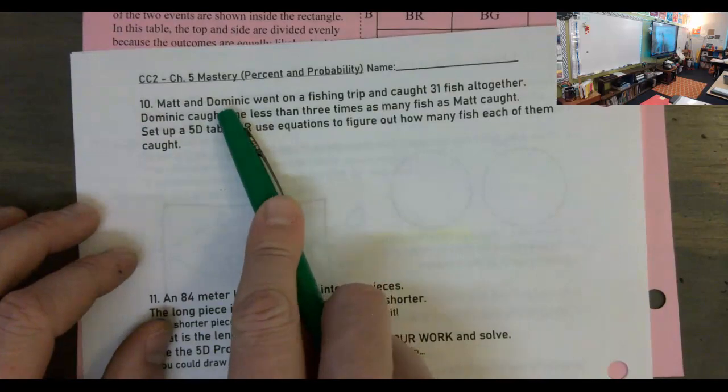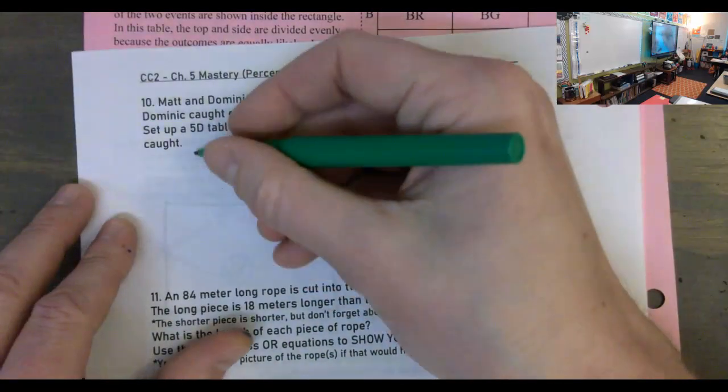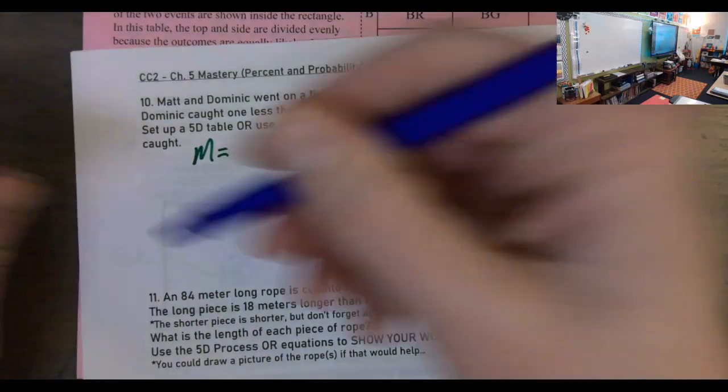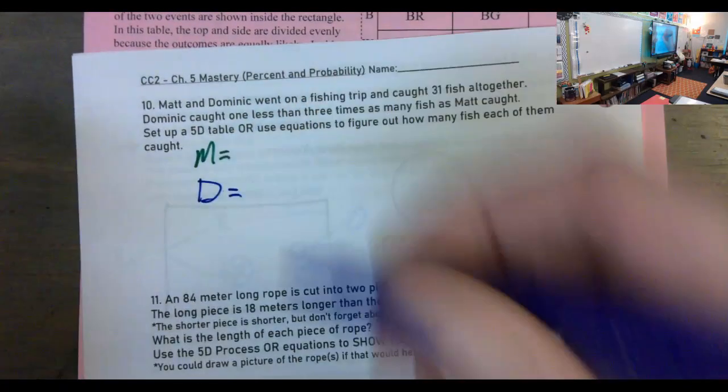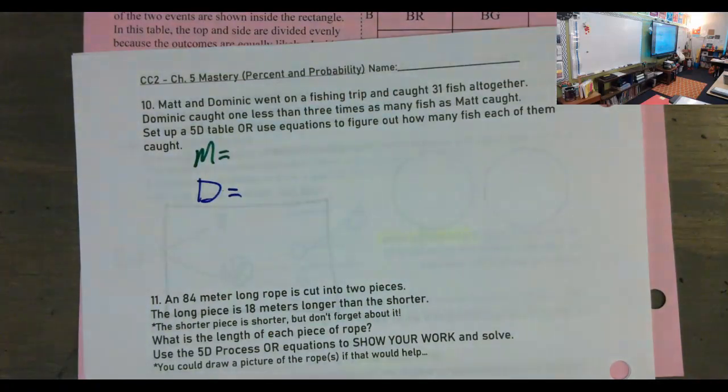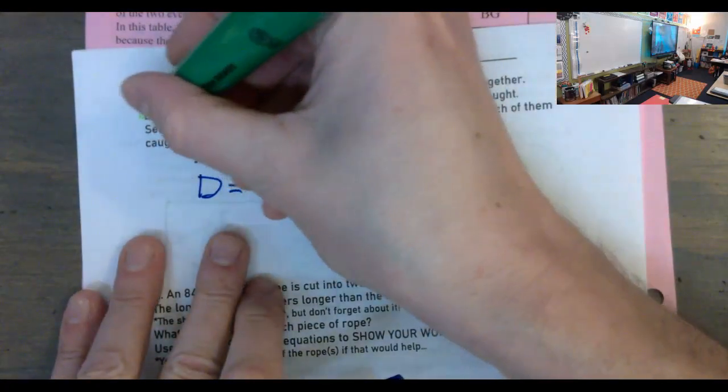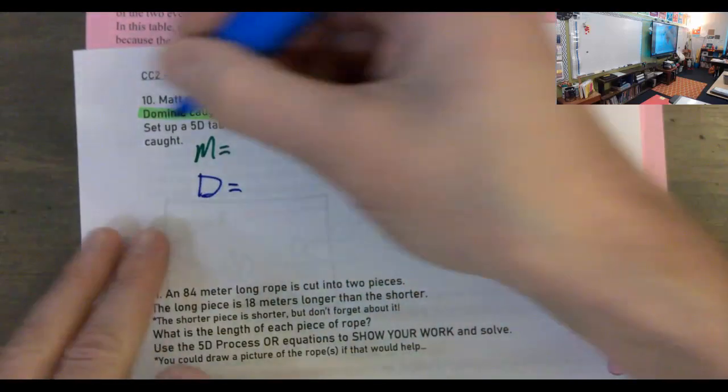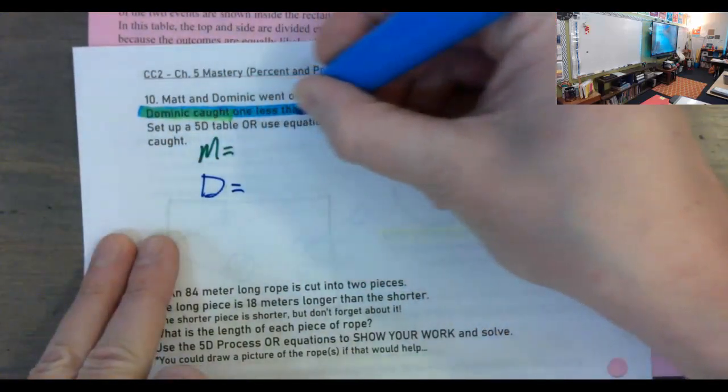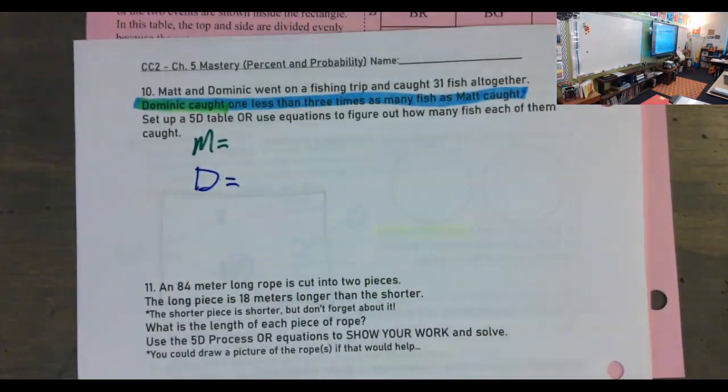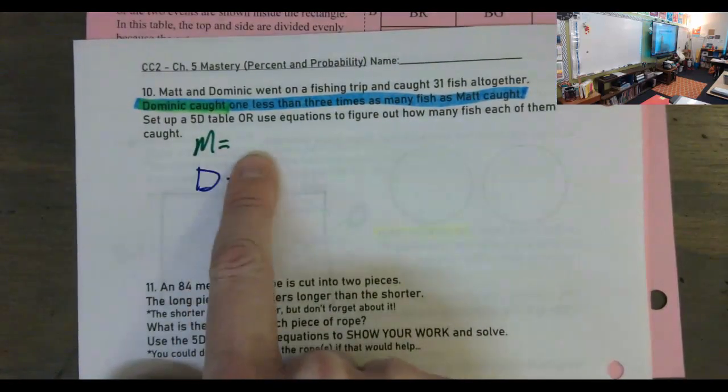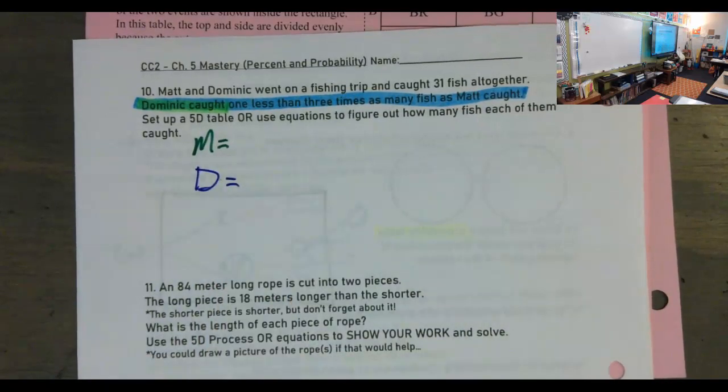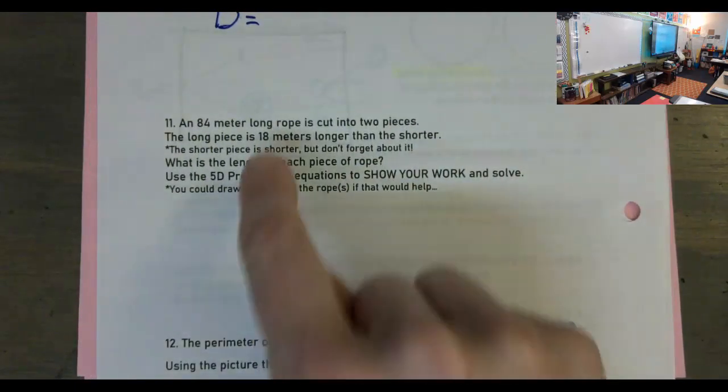And on the back, more possible 5D or algebra. Matt and Dominic. Please don't forget about one of them. They are both going fishing. They both caught fish. So we have Matt equals. We have Dominic equals. What will Dominic equal? Well, they tell us. Dominic caught, oh, I guess I should be highlighting in blue since I wrote D in blue. Dominic caught one less than three times as many fish as Matt. But then don't forget about what Matt caught.